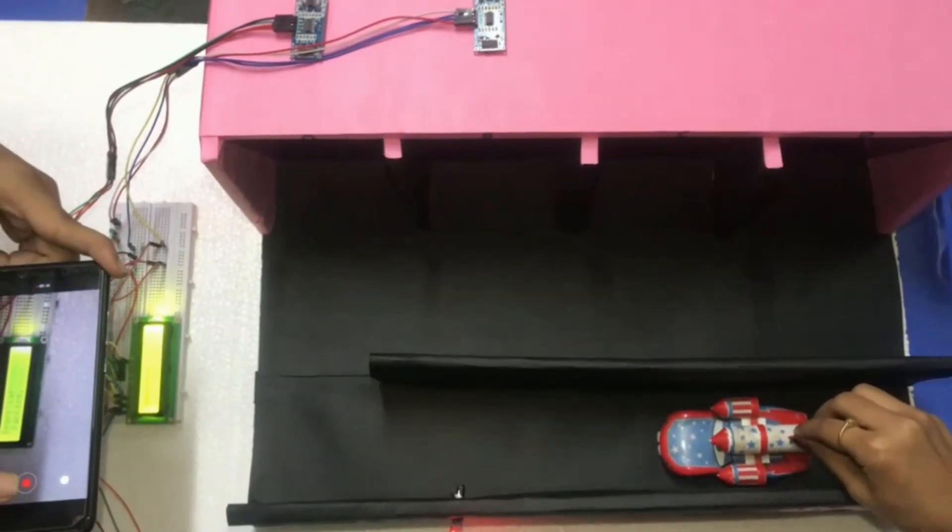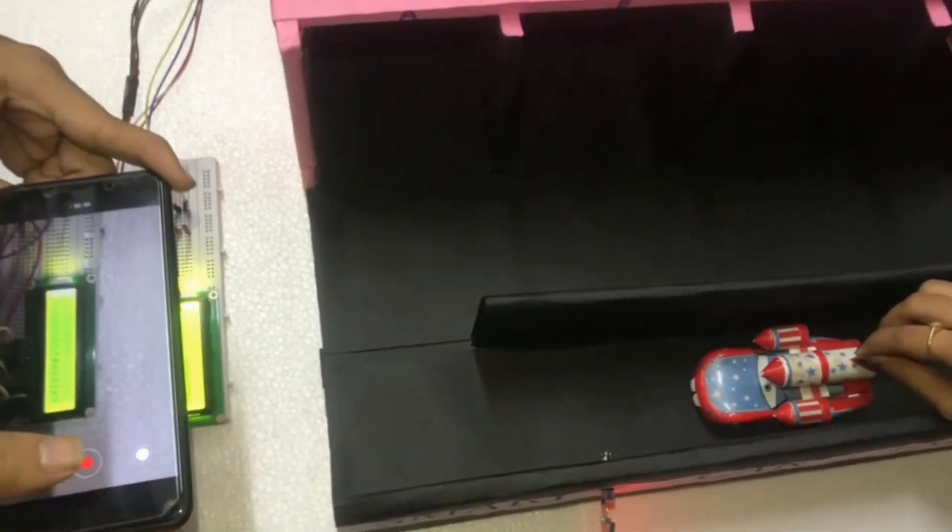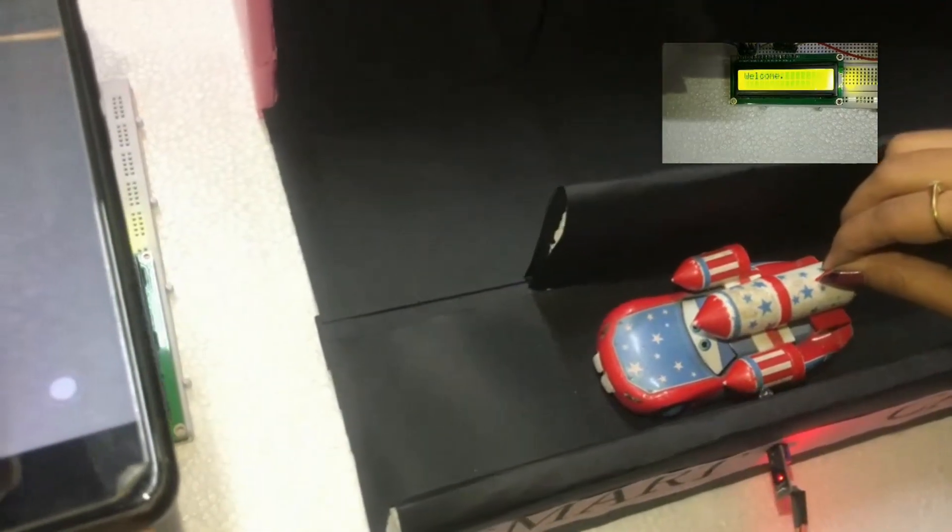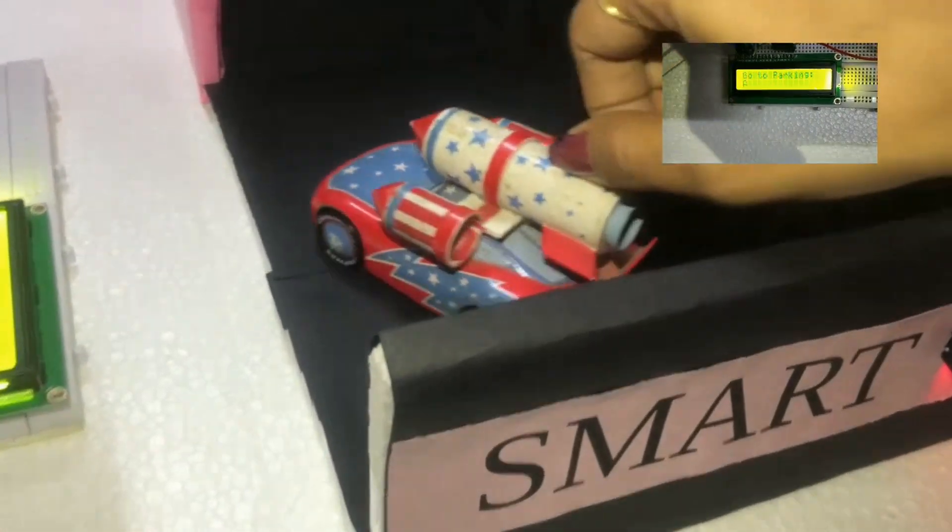Now let's see a demo. As soon as the car enters the parking, the infrared sensor senses that a car has come and we display on the LCD go to parking A or go to parking B depending on the availability. The driver can go and park the car in the allotted parking lot.